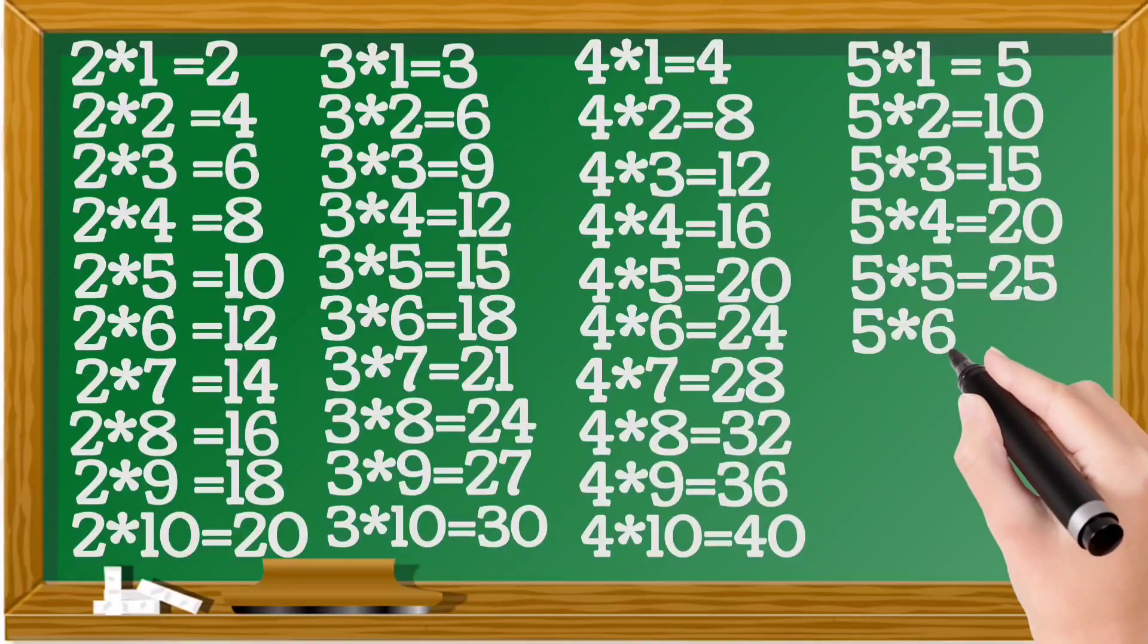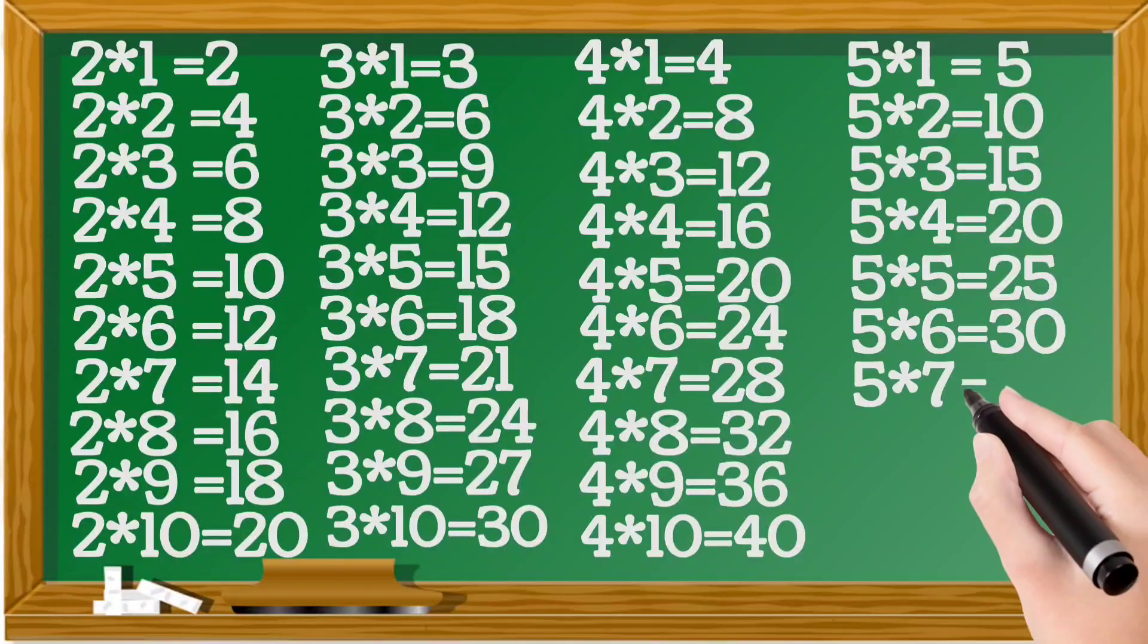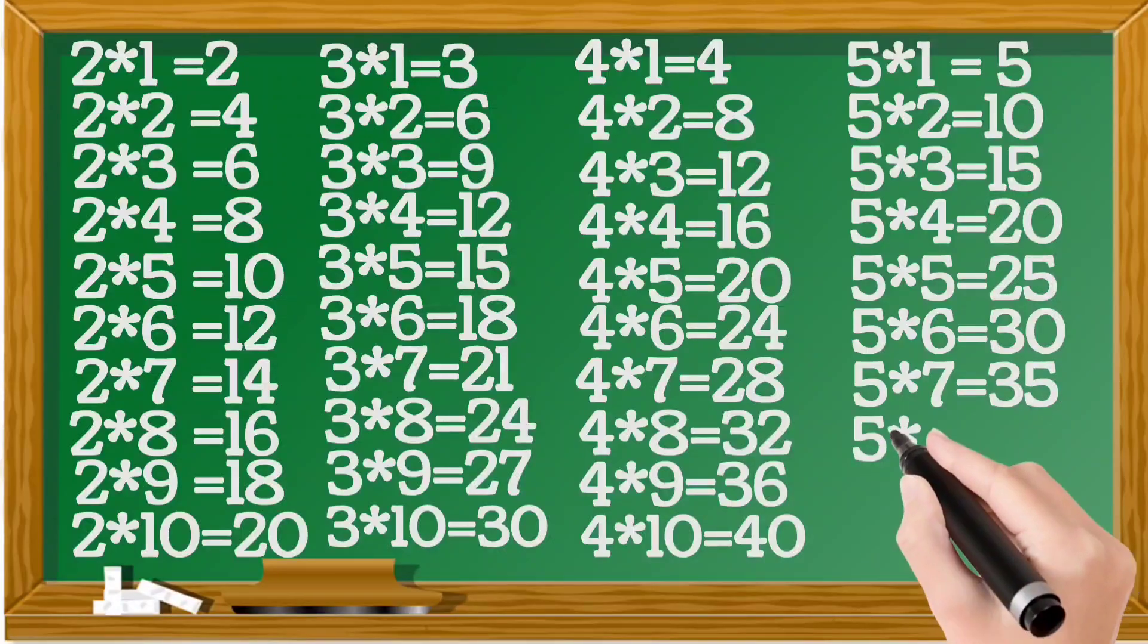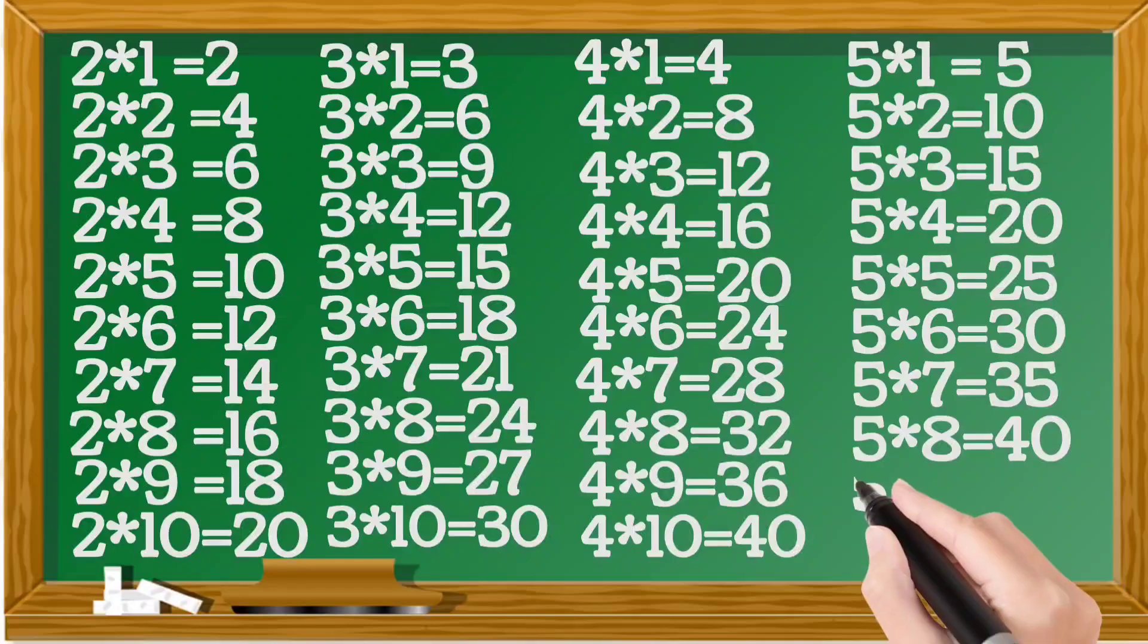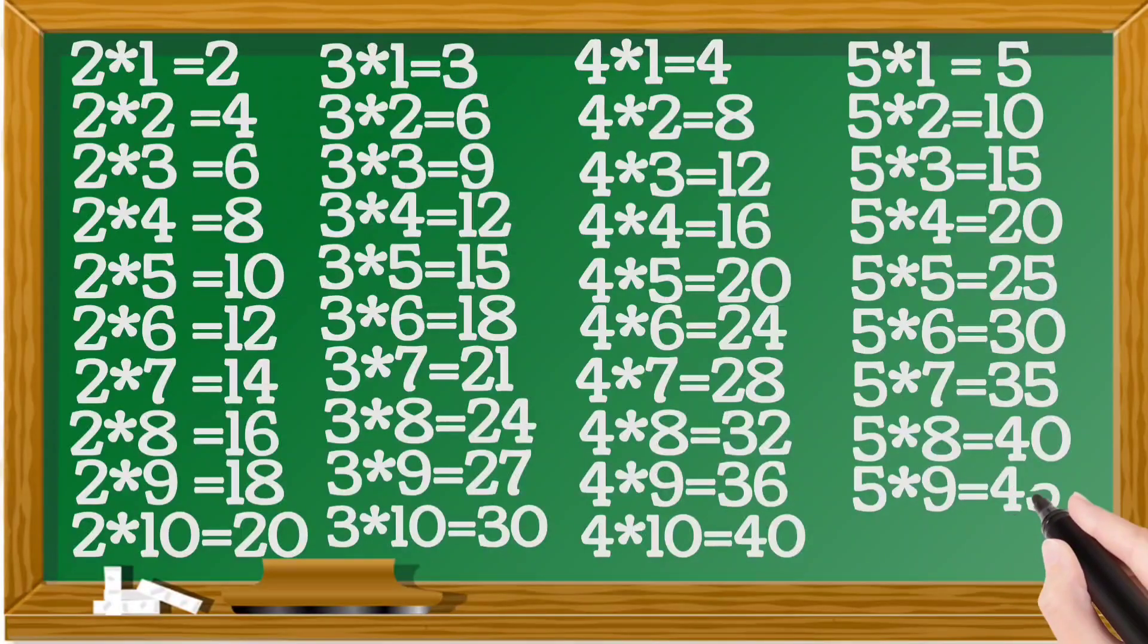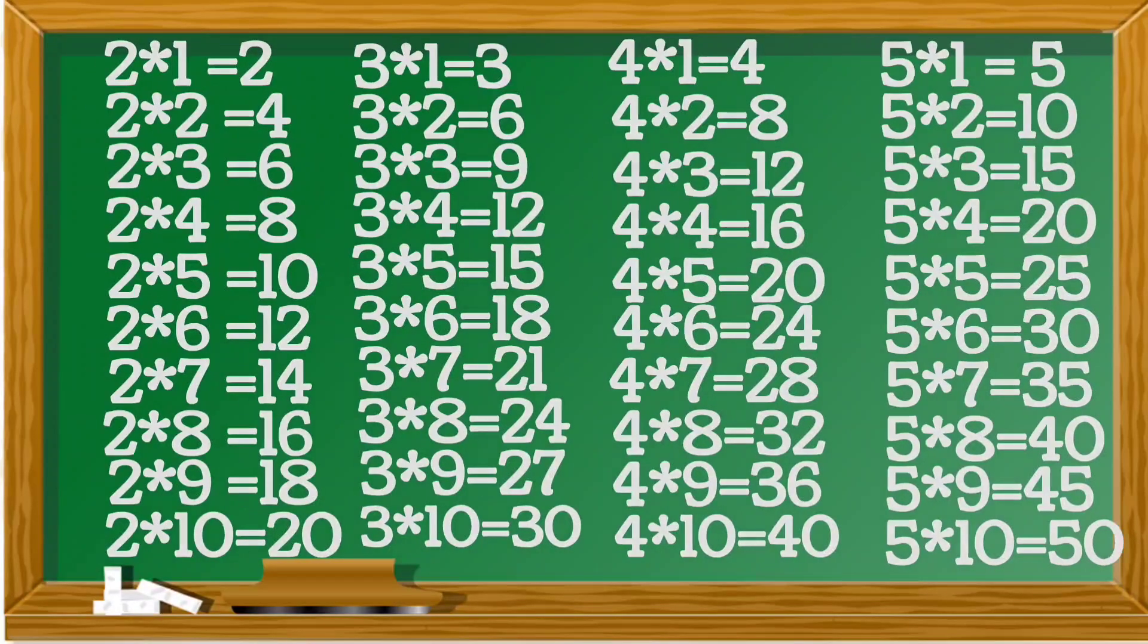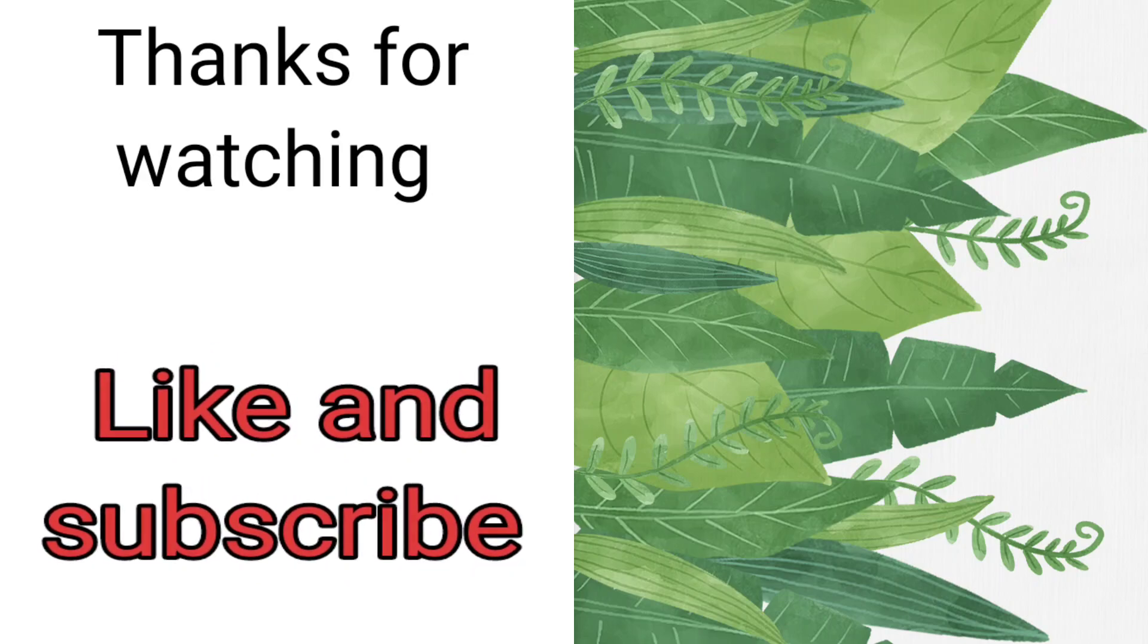5x6=30, 5x7=35, 5x8=40, 5x9=45, 5x10=50.